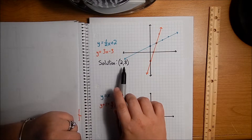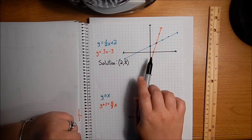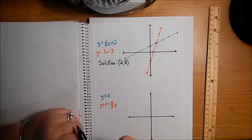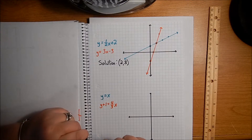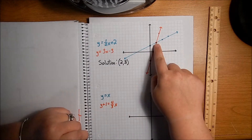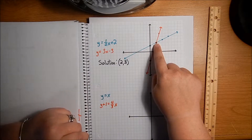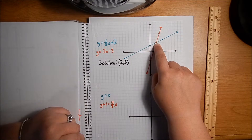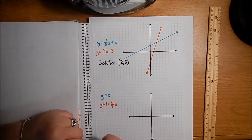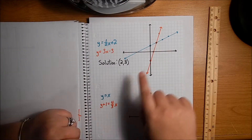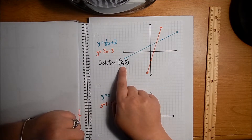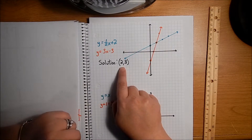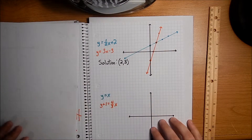If you have two straight lines and they're going to intersect, it's either going to happen once, or it's going to happen a whole lot of times — we'll talk about that later. Usually it's only going to happen at one point, and there it is. We'll talk about the other cases in a few minutes.